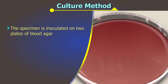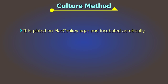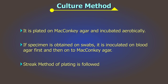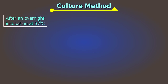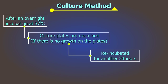Culture Method: The specimen should be inoculated on two plates of blood agar — one for incubation at 37 degrees centigrade aerobically and the other for incubation anaerobically in nitrogen or hydrogen plus 5 to 10% carbon dioxide. It should also be plated on MacConkey agar and incubated aerobically. If the specimen is obtained on swabs, it should be first inoculated on blood agar and then onto MacConkey agar using the streak method. The culture plates are examined after an overnight incubation at 37 degrees centigrade. If there is no growth, they should be re-incubated for another 24 hours.